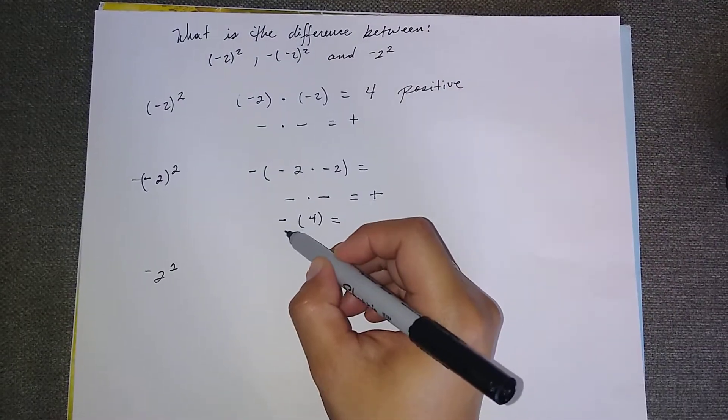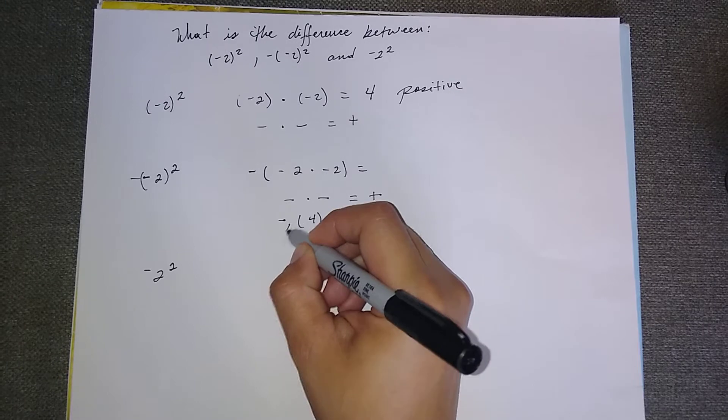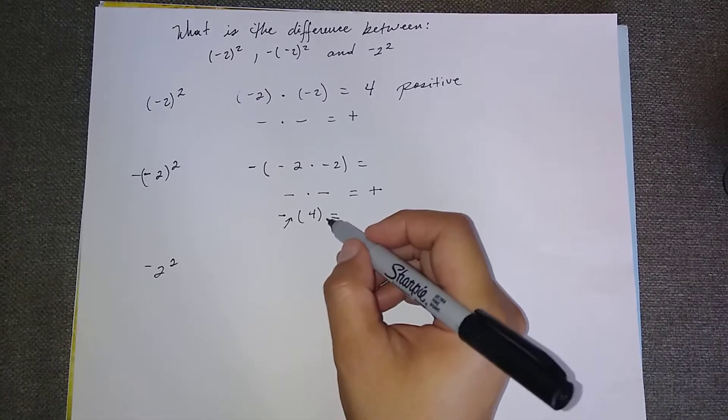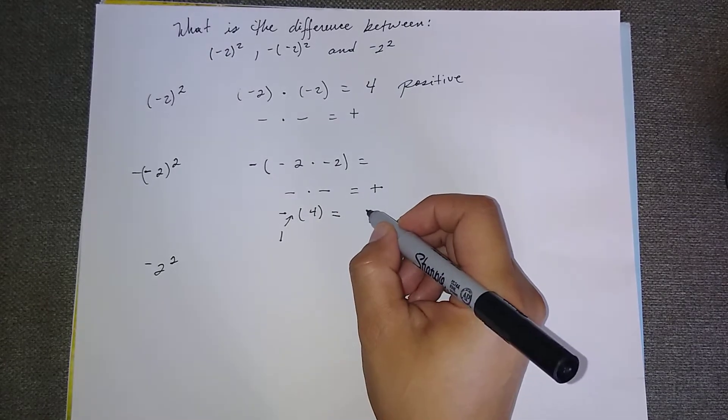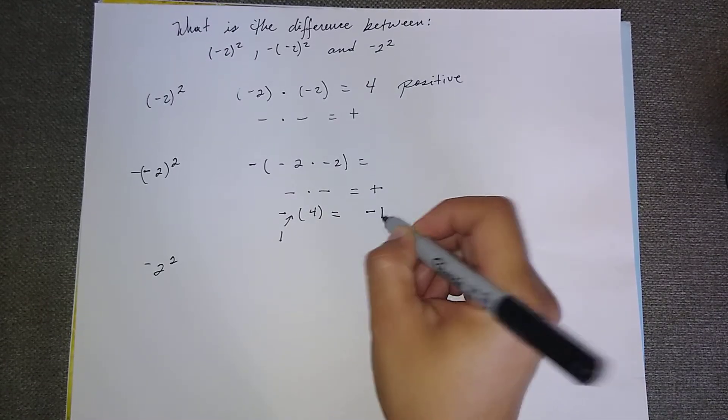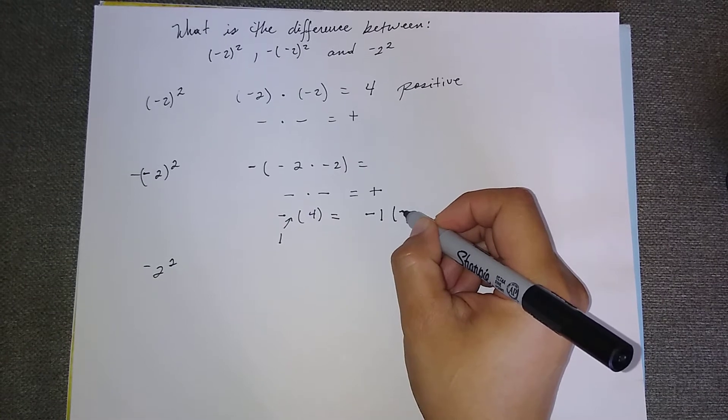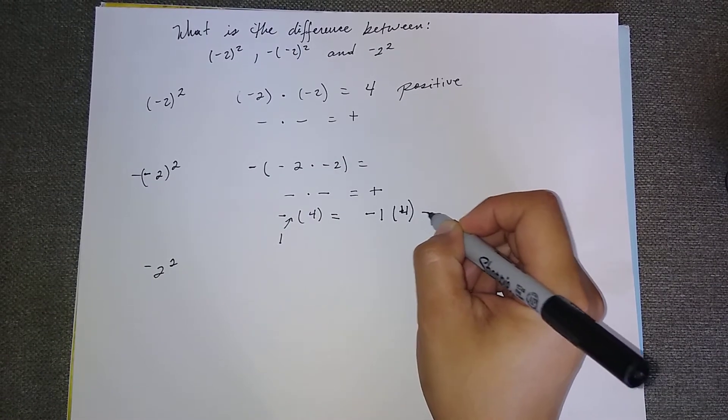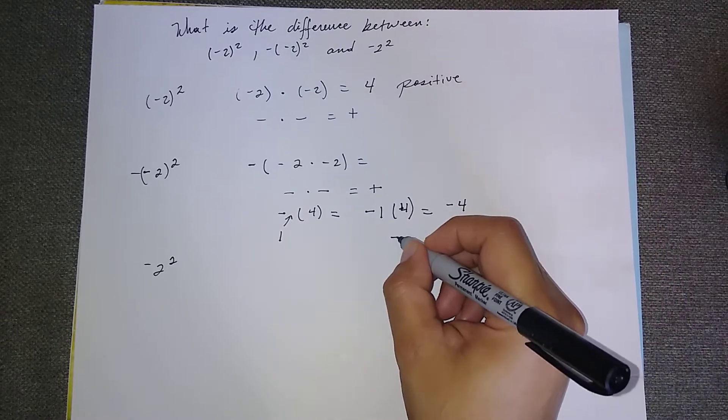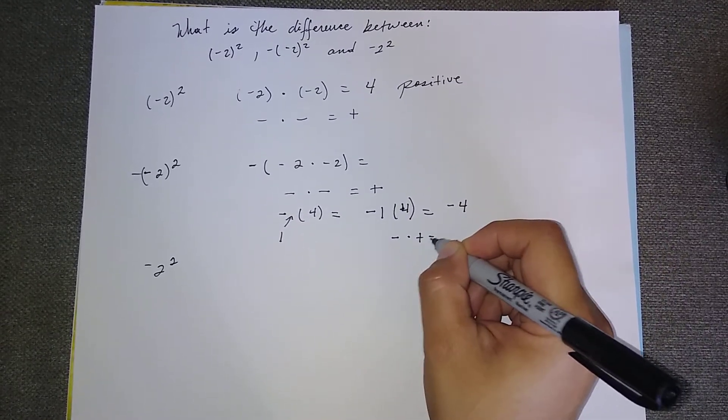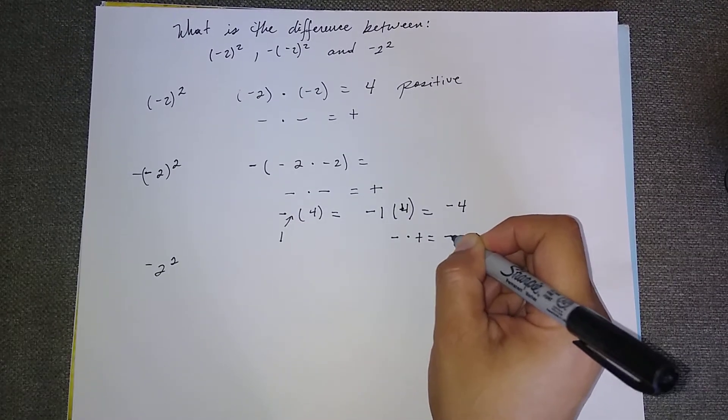And here, just because we don't write it doesn't mean that it's not there, is a one. So this should read negative one times four will give us negative four, because a negative times a positive will give you a negative.